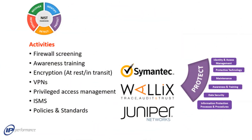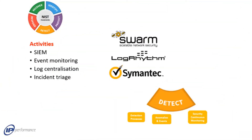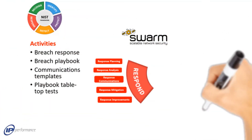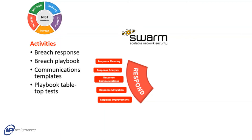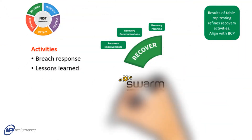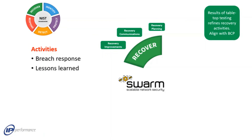The Protect function covers traditional defensive technology such as antivirus and firewalls, but also addresses processes, policies, and awareness. Once identified and protected, your assets need to be monitored to detect incursions against your defenses. Should you detect an incident, the Respond function defines what activities take place to process and respond to that incident. Finally, the Recover function describes the processes for restoration of services, recovery of damaged or missing assets, and includes any disaster recovery plans.